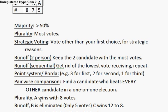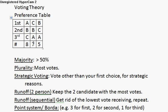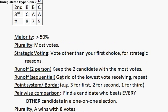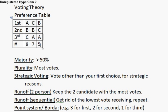Looking at our results: in a plurality system, A would win with eight votes. In a runoff, either type, B would be eliminated and those five votes would switch to C, so C wins. In a pairwise comparison, for example B versus C: B beats C on these eight votes, C beats B on seven, and B beats C on five. So five plus eight is 13 to seven — B beats C. You'll generally want to write those down and add them up.